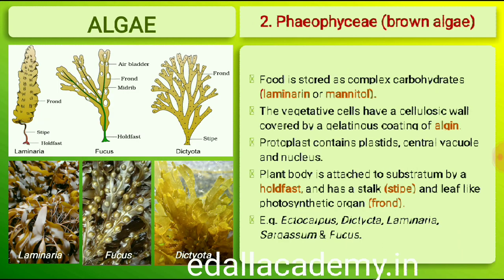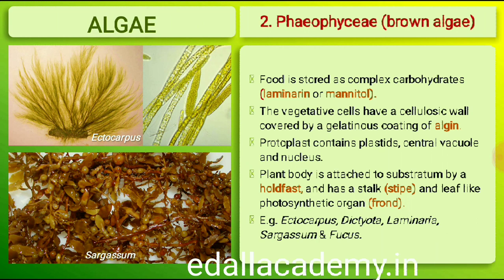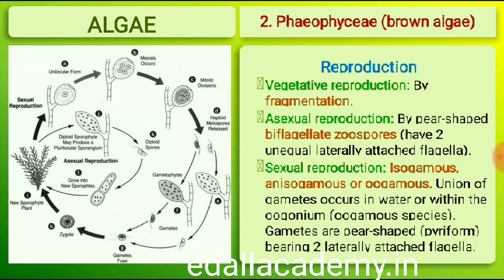Food is stored as complex carbohydrates, which may be in the form of laminarin or mannitol. The vegetative cells have a cellulosic wall usually covered on the outside by a gelatinous coating of algin. The protoplast contains, in addition to plastids, a centrally located vacuolate nucleus. The plant body is usually attached to the substratum by a holdfast, and has a stalk (the stipe) and leaf-like photosynthetic organ (the frond). Vegetative reproduction takes place by fragmentation. Asexual reproduction is by biflagellate zoospores that are pear-shaped with two unequally attached flagella. Sexual reproduction may be isogamous, anisogamous or oogamous; union of gametes may take place in water or within the oogonium in oogamous species.